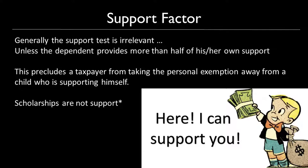The support test is generally irrelevant unless the dependent provides more than half of his or her own support. This precludes a taxpayer from taking the personal exemption away from a child who is supporting himself. Scholarships are not support. When determining whether the child is supporting himself or herself, that child cannot provide more than one half of their support. Support includes things like clothing, food, a place to live, necessities of life, a car, or a television, or anything that you are providing to help support that child.